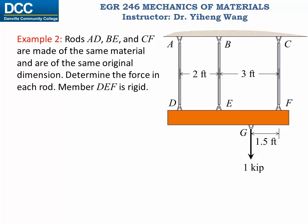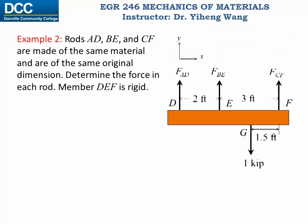Let's look at a different type of problem. Here we have three rods AD, BE, and CF. They are made of the same material and have the same original dimensions — same length, cross-sectional area, and Young's modulus. They are connected to a rigid body DEF, which is not allowed to deform. It is subjected to an applied force of 1 kN, and we need to determine the force developed in each of the rods for equilibrium. We start by drawing the free body diagram of member DEF, showing all unknown forces FAD, FBE, and FCF.